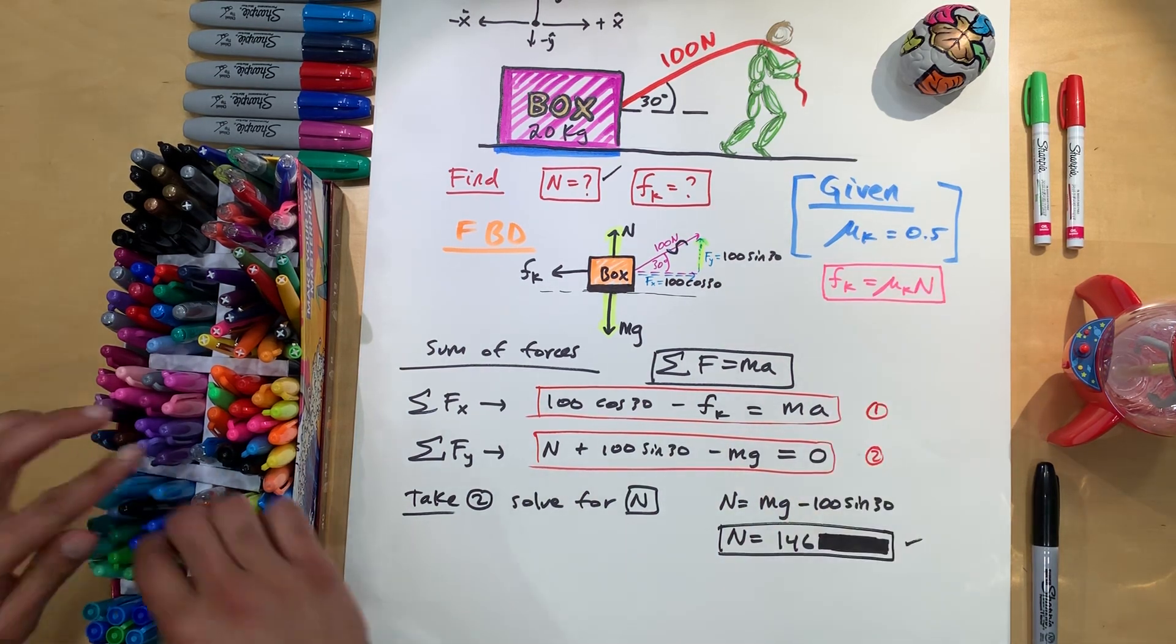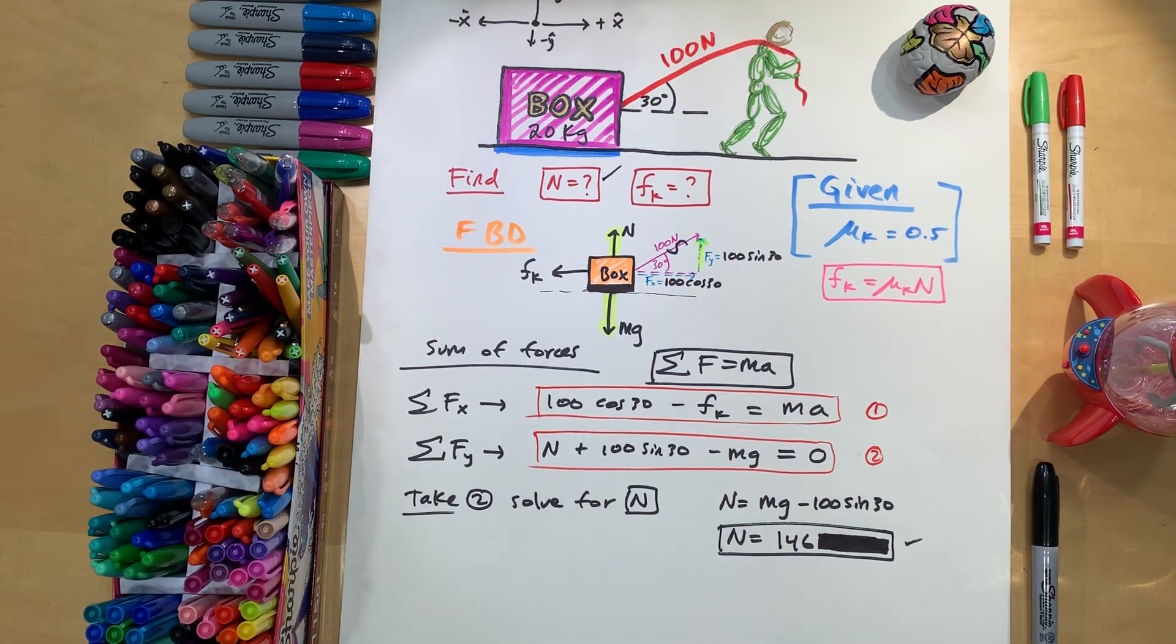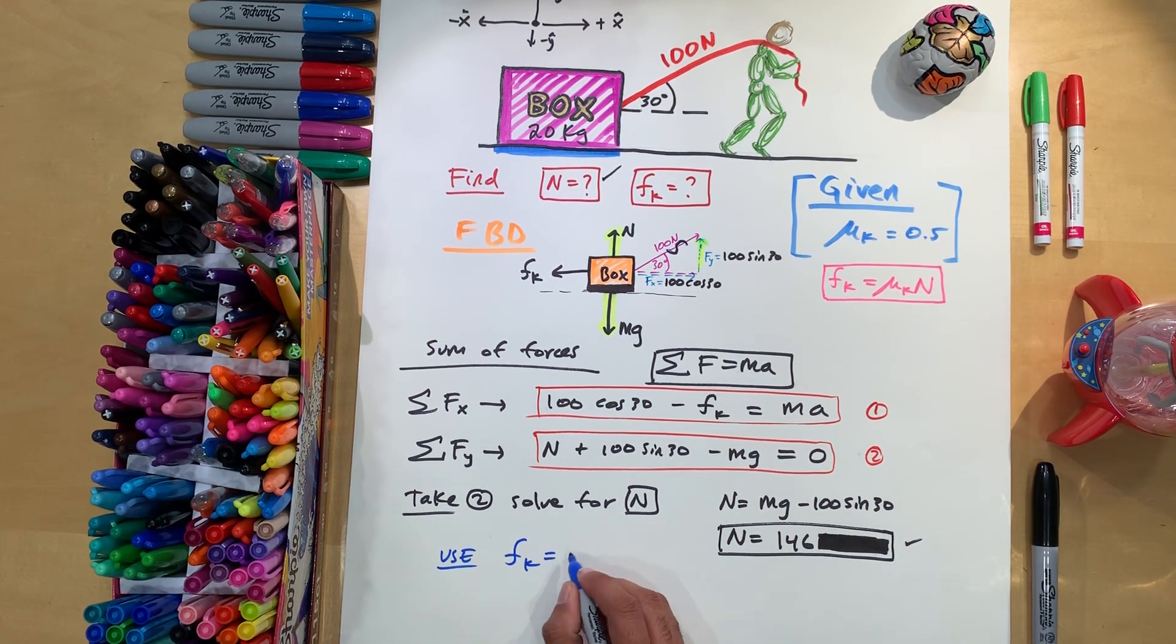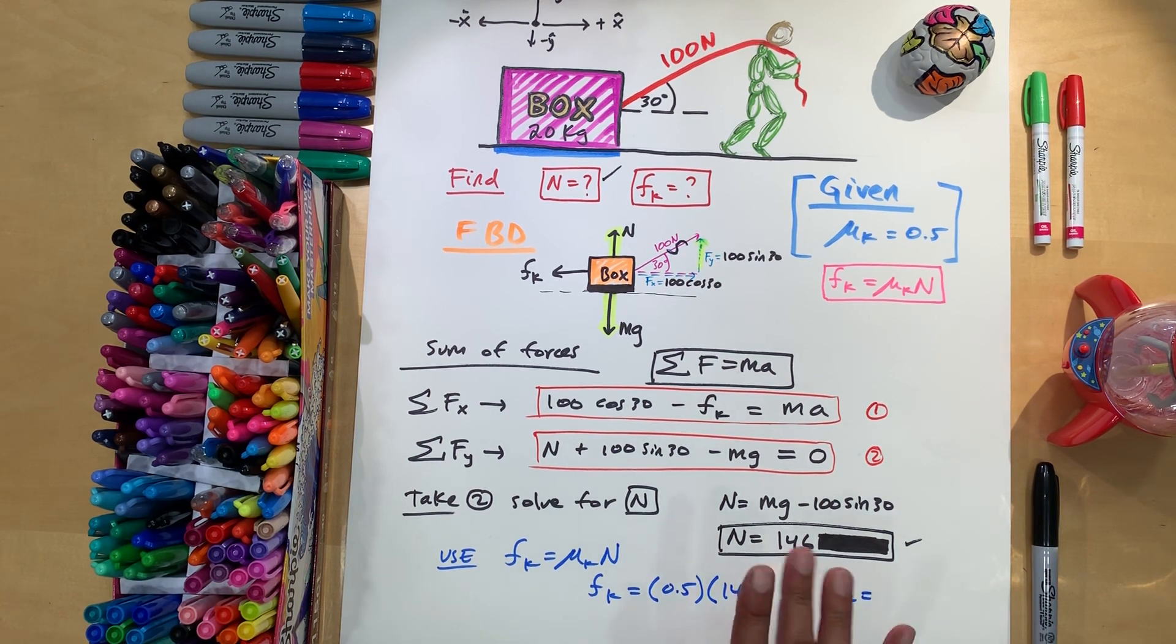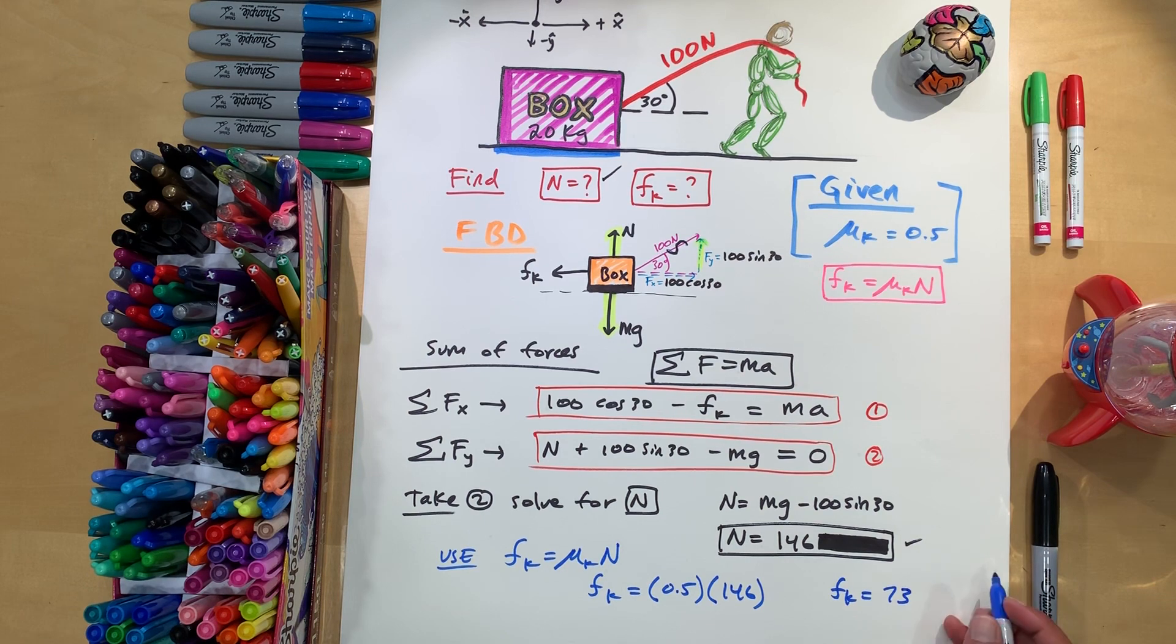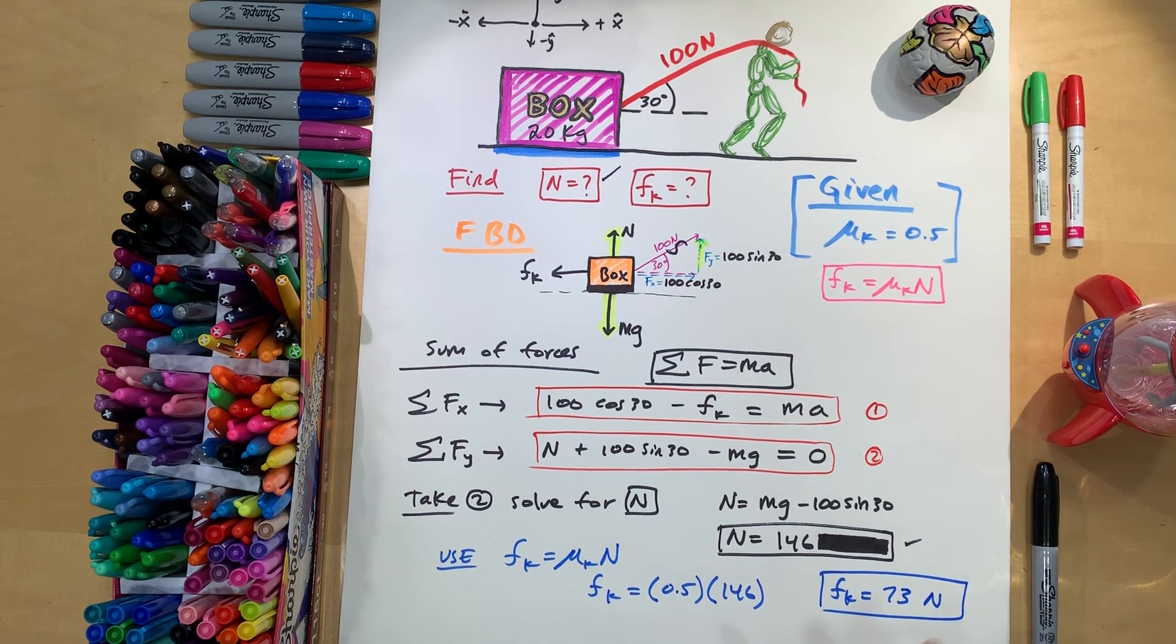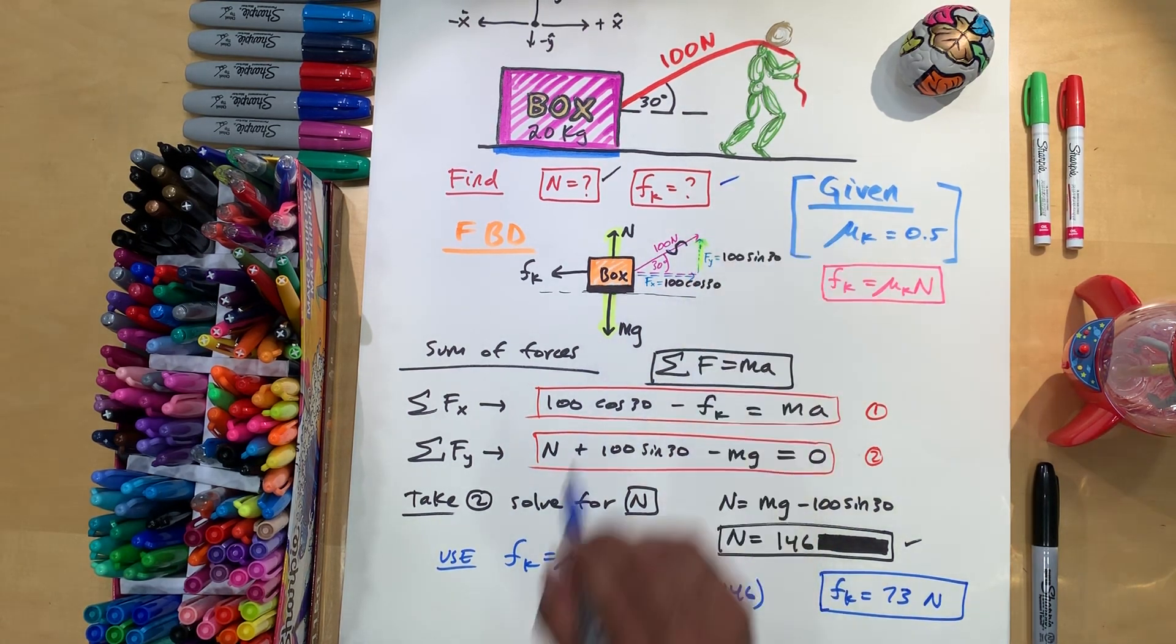For the last part, we're going to use friction is equal to mu k n. Friction, kinetic. Mu is 0.5. And n is 146. Putting that into calculator 73. And that we can put newtons, because force is usually measured in newtons. So for that one, I'll put that and we found this one.